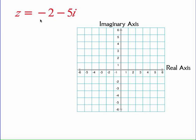Let's take a look at the complex number negative 2 minus 5i. First we're going to graph it on our imaginary plane. Then we're going to draw in the line from the origin out to our point.